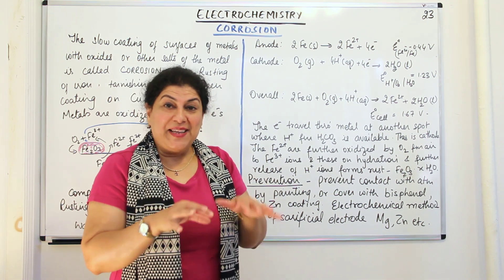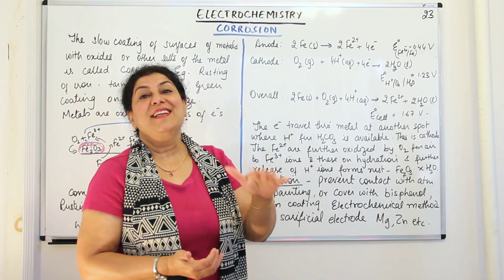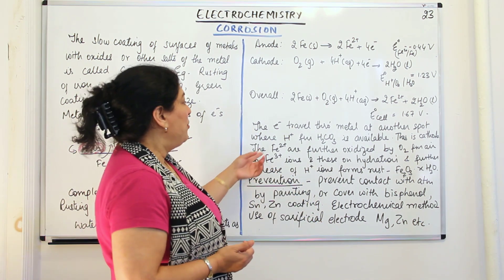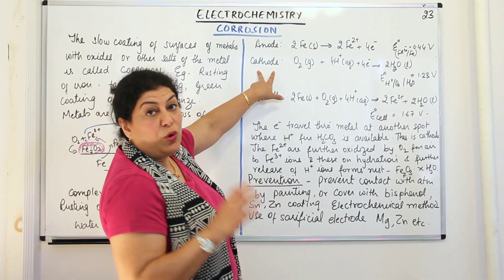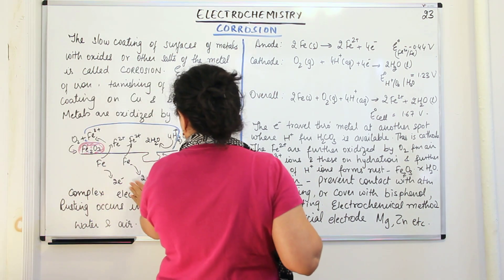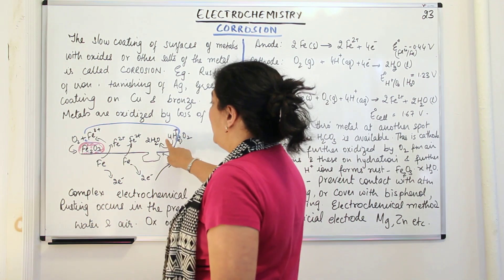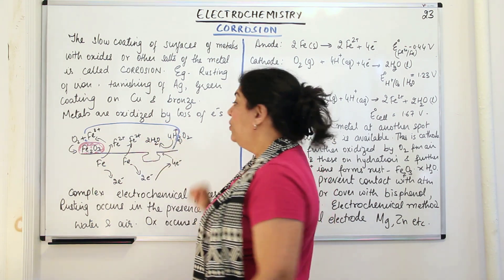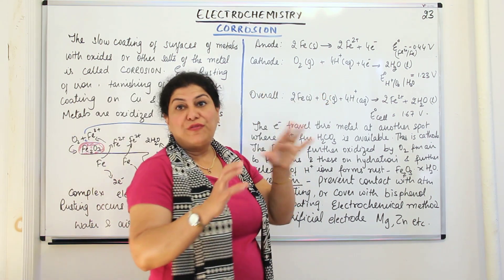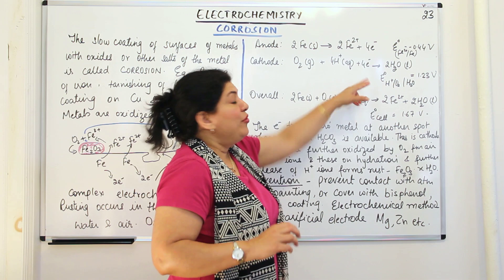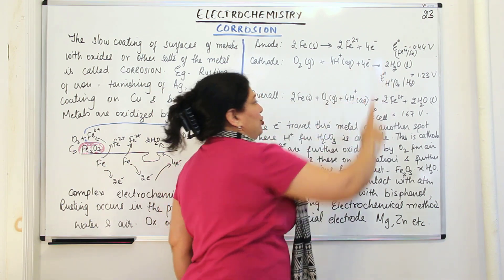When H+ ions are available, this point starts acting as the cathode. The four electrons which travelled through the metal reach this damaged spot where water got collected and H+ is supplied due to the formation of H2CO3. At the cathode, oxygen from the air, the H+ from the carbonic acid, and the four electrons which iron supplied all react and result in the formation of water.